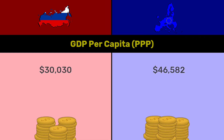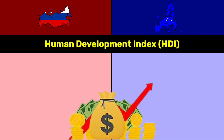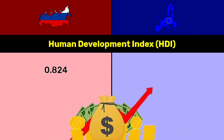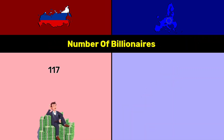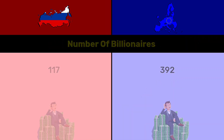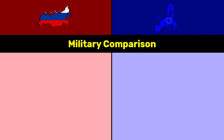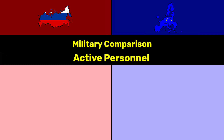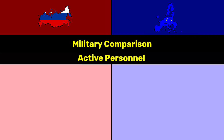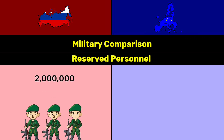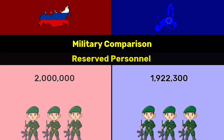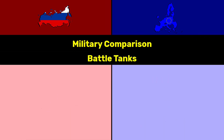HDI: Russia 0.824, EU 0.911 — both are very high. Number of billionaires: Russia 117, EU 392. Military comparison — active personnel: both have more than 1 million active personnel. Reserve personnel: Russia 2 million, EU 1.92 million.